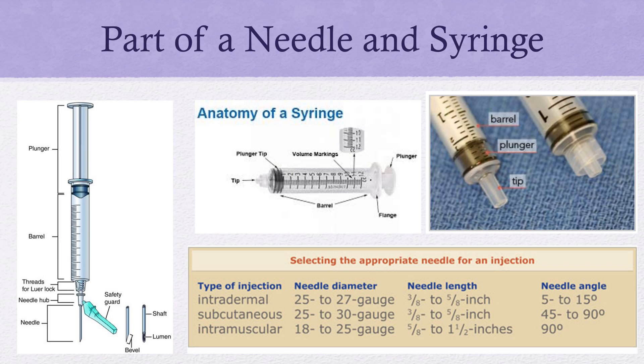For intradermal injections, which are just right under the skin, we're going to use a small needle — a 25 to 27 gauge, though each hospital will vary. Just remember you want a really small one for this injection. Needle length is also important — from the hub to the end of the needle. For intradermal, you want a very small needle length as well: about 3/8 to 1/2 of an inch.